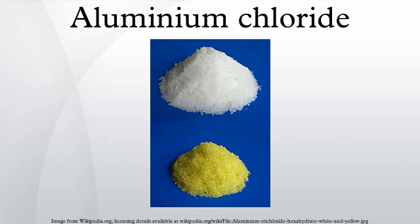Hydrated aluminium trichloride is prepared by dissolving aluminium oxides in hydrochloric acid. Metallic aluminium also readily dissolves in hydrochloric acid, releasing hydrogen gas and generating considerable heat. Heating this solid does not produce anhydrous aluminium trichloride; the hexahydrate decomposes to aluminium oxide when heated to 300 °C: 2 AlCl₃ + 3 H₂O → Al₂O₃ + 6 HCl. Aluminium also forms a lower chloride, aluminium(I) chloride, but this is very unstable and only known in the vapour phase.